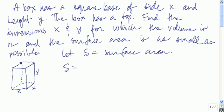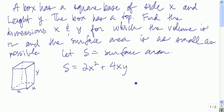s is the surface area of this box. The bottom area is x squared, the top is x squared as well, so 2x squared, plus the areas of all four sides. The area of each side is x times y and we have four of those. So this is called the primary equation.